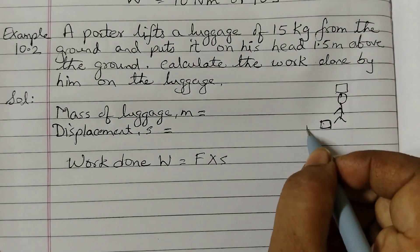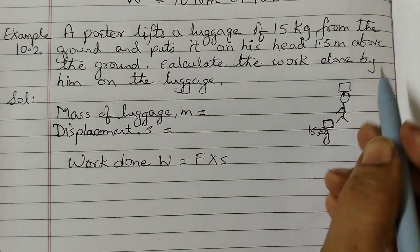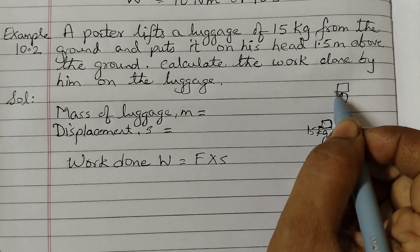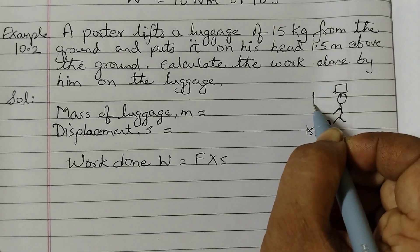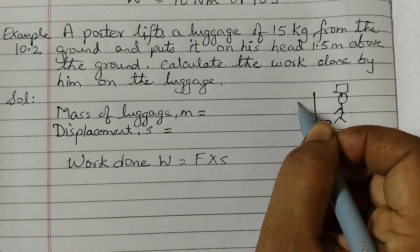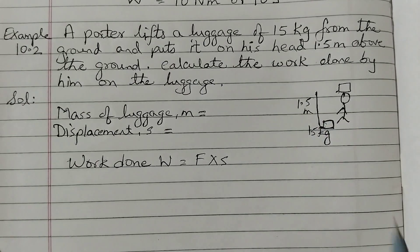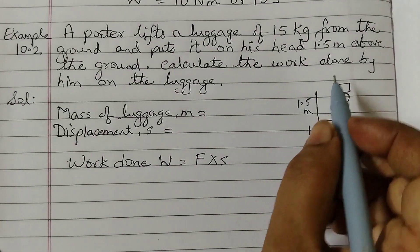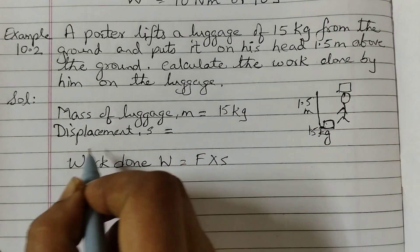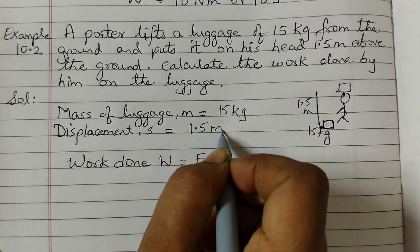The mass of the luggage is 15 kg and there is a displacement of 1.5 meters. So displacement — if I take this point here, this would be the point, this is my displacement, this distance, which is 1.5 meters. We need to find the work done. So mass of luggage is 15 kg, displacement is 1.5 meters.